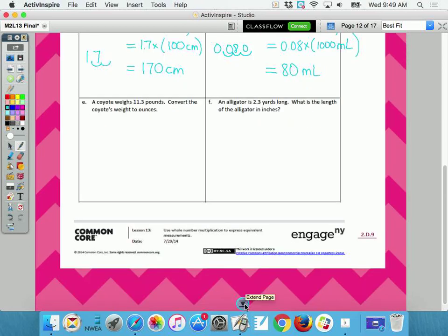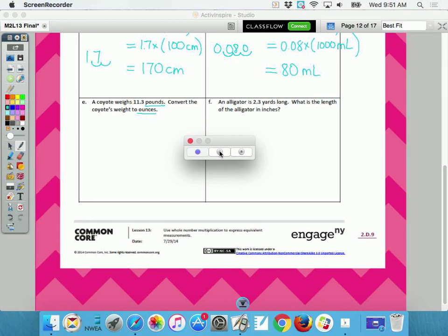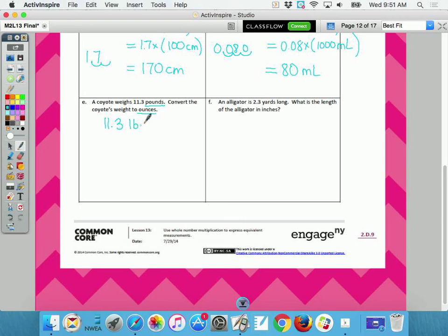So let me read this little mini word problem. A coyote weighs 11.3 pounds. Convert the coyote's weight to ounces. So what are my two words? Pounds and ounces. This is not the metric system. So I suspect we'll have standard algorithm here. Eleven point three LBS equals.